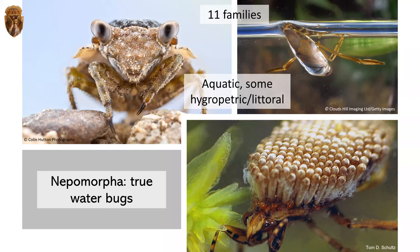Then we have the true water bugs, or Nepomorphins, with 11 families. They are primarily aquatic with some hygropetric and littoral species as well.